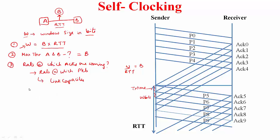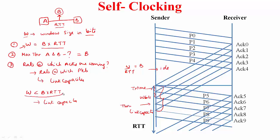Even if you set W less than the bandwidth-delay product, the rate at which you get acknowledgements is still dictated by the link capacity. When W is smaller, the link is idle for some time, but when you are sending data and receiving ACKs, the throughput the sender achieves equals the link capacity. So ACKs have this nice property called self-clocking: by sending out data in response to ACKs, you achieve the throughput you are entitled to.